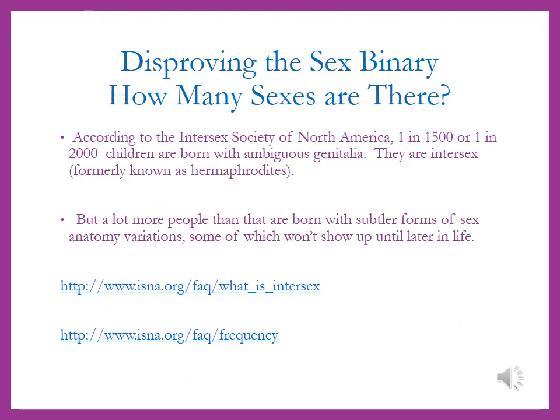Having started with the easier of the two binaries — the gender binary — let's look at the sex binary, the idea that there are only two opposite forms of sex: male and female. If I ask how many sexes there are, you might note that biologists have found certain types of birds with very clearly five different sexes. Yet many people believe that with humans there can only be two. According to the Intersex Society of North America, one in every 1,500 to 2,000 children is born with ambiguous genitalia — people who used to be called hermaphrodites but today we call them intersexed.